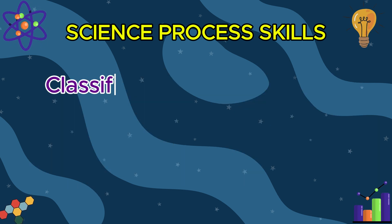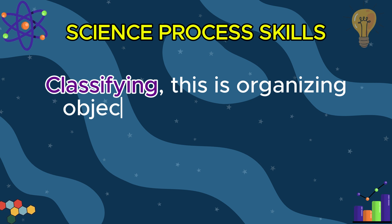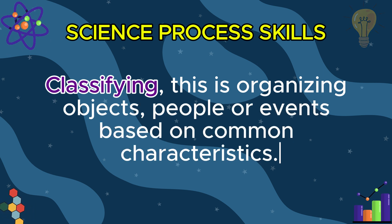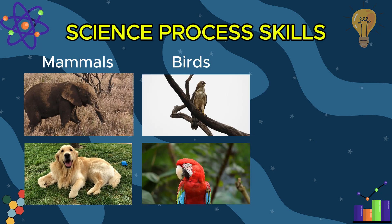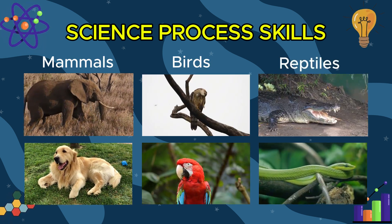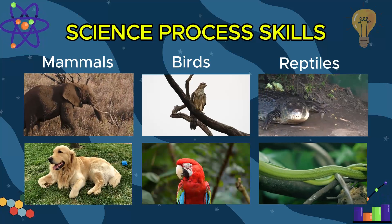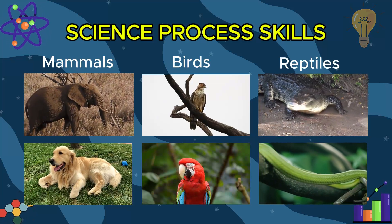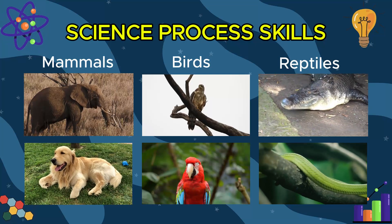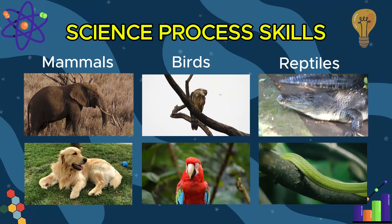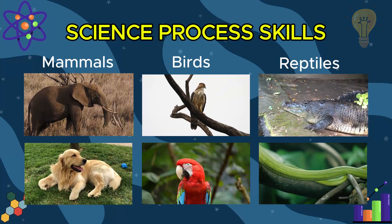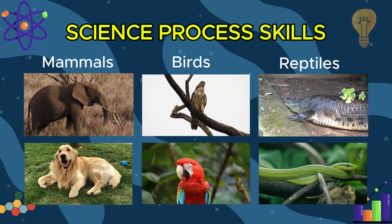Next is classifying. This is organizing objects, people, or events based on common characteristics. For example, you can classify animals by their types, like mammals, birds, and reptiles. Each of these animals belongs to its respective group due to specific characteristics — like fur in mammals, feathers in birds, and scales in reptiles.